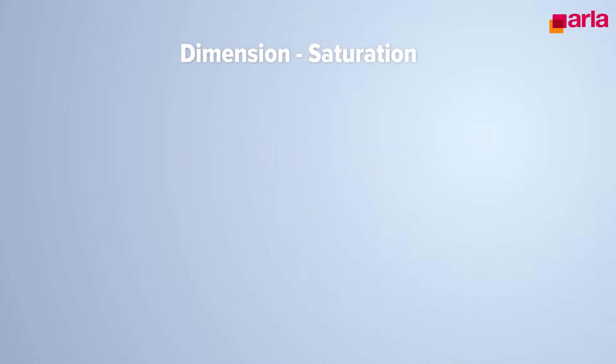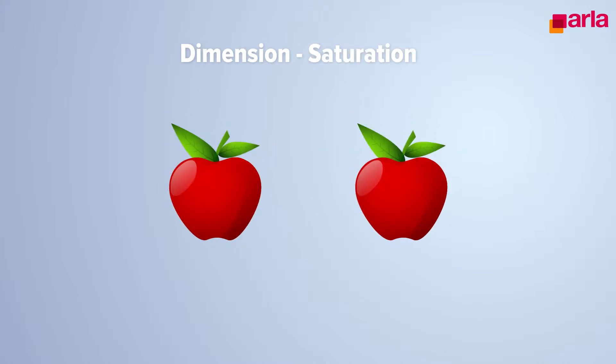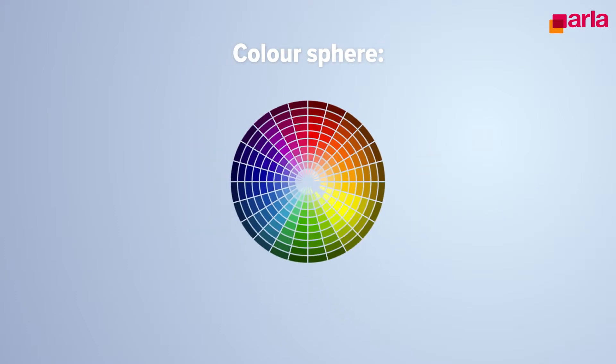The third dimension is saturation. This can be explained as if a color is weak or strong. A dark red, for example, is more saturated than a light red. Here you can see all three dimensions together in a so-called color sphere.